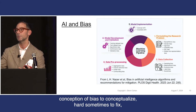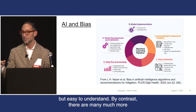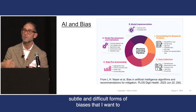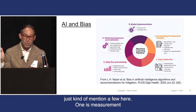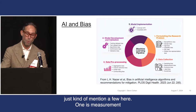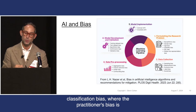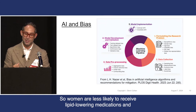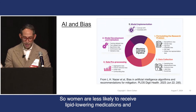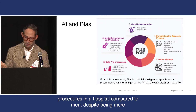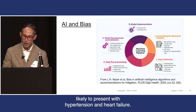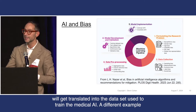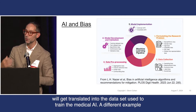That's an easy conception of bias to conceptualize, hard sometimes to fix, but easy to understand. By contrast, there are many much more subtle and difficult forms of bias. One is measurement classification bias, where the practitioner's bias is translated into what's in the data set being used to train. So women are less likely to receive lipid-lowering medications and procedures in a hospital compared to men, despite being more likely to present with hypertension and heart failure. That measurement bias will get translated into the data set used to train the medical AI.